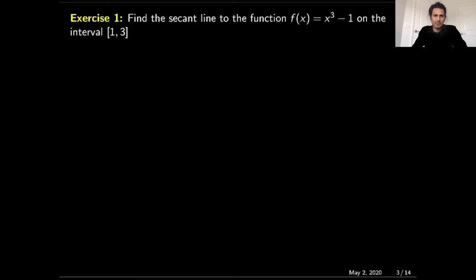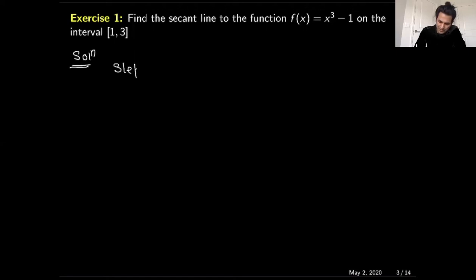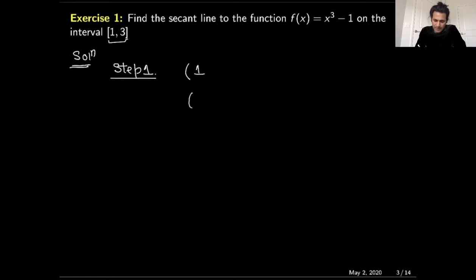Here I have one example where we will calculate the slope of the secant line on the interval one to three. In step number one, we will calculate the points where the line intersects the graph of the function. The interval is one to three, meaning the x-values are one and three, so we need to calculate the corresponding y-values.